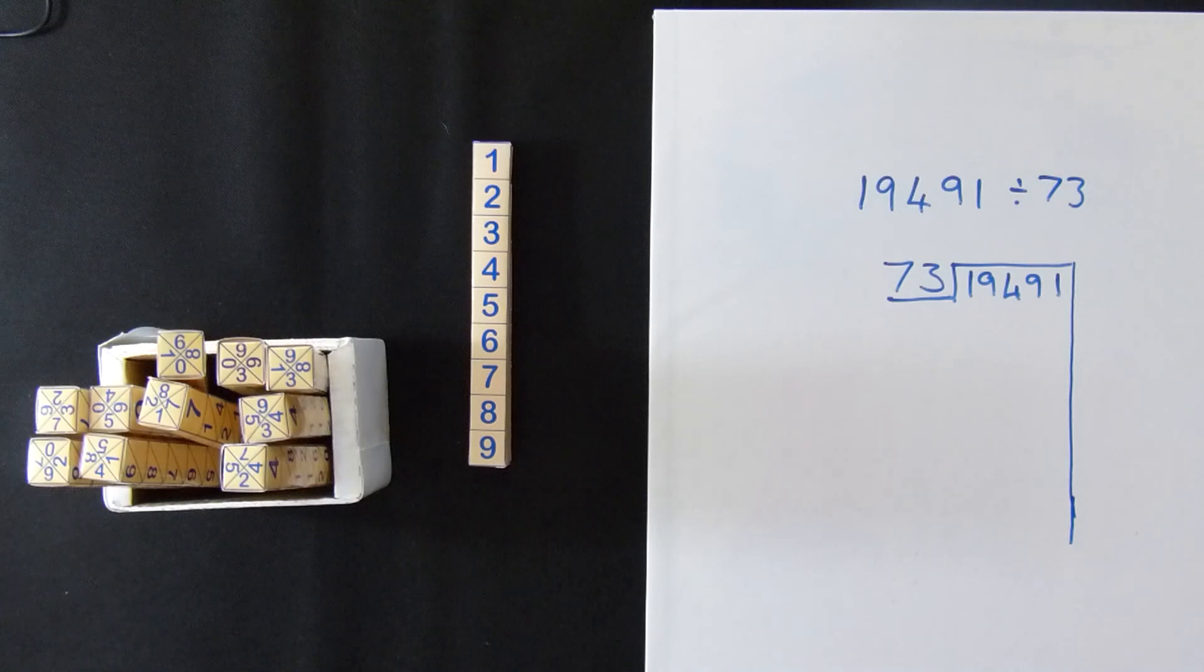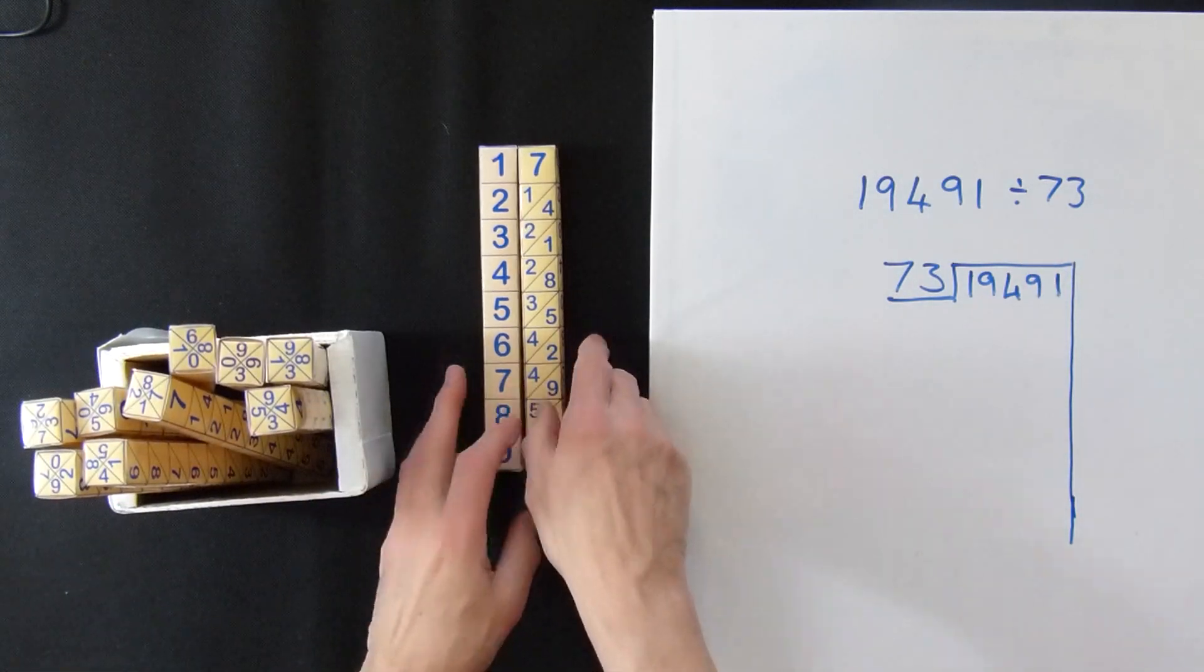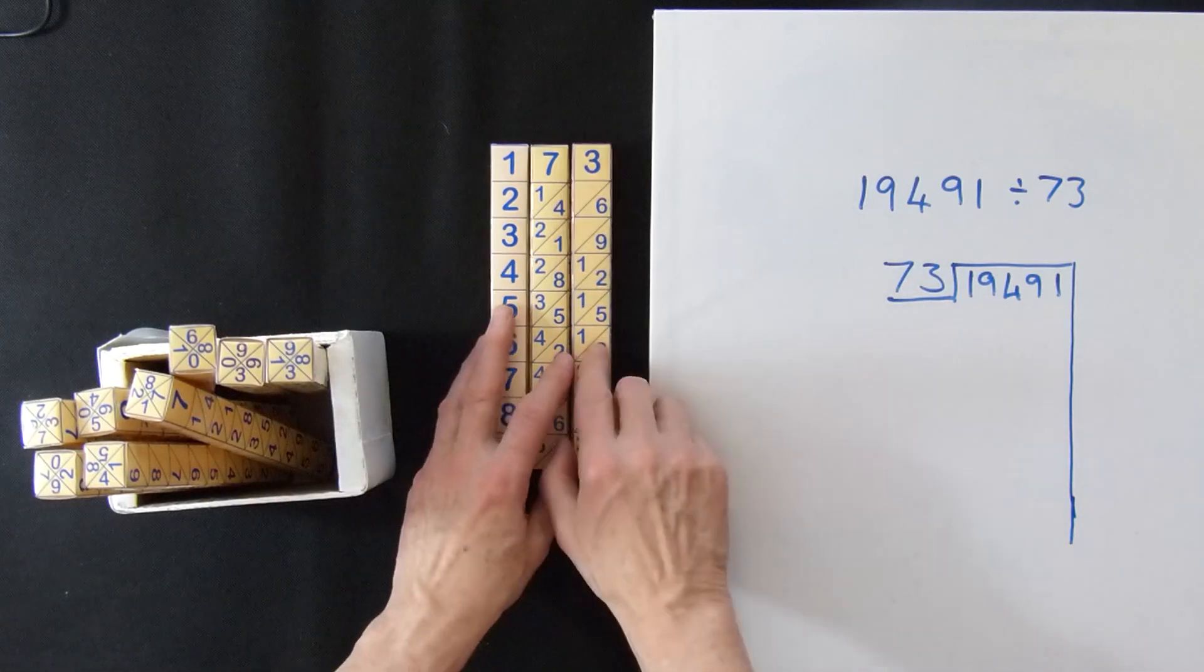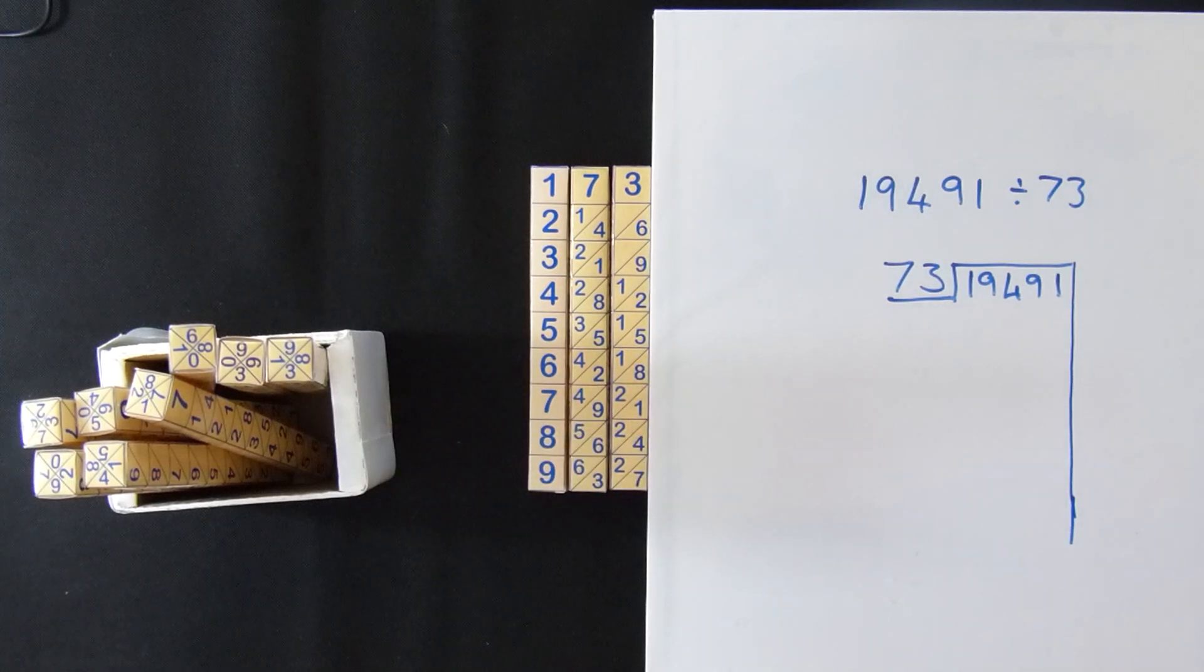Now comes the bones. We're dividing by 73 so we're going to need a 7 bone for the 70 and we're going to need a 3 bone for the 3. Now I'm going to put it tight in against a working pad this time. What we need is, we need the 73 times table. How many of you know your 73 times table? Well, we're using Napier's bones so you don't need to know your 73 times table.